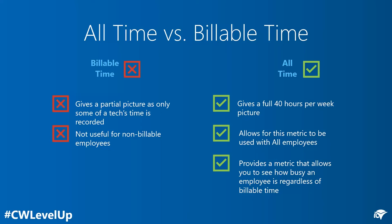As we move to tracking all time, you get a full 40 hours from each resource each week. You now have that utilization percentage you can use for dispatchers, coordinators, and even managers, which allows that non-billable time to still be useful when you're doing reporting. It also allows you to then see how busy everybody is in terms of trainings, meetings, and other things that are potentially not client-facing billable work but are still useful to the company.